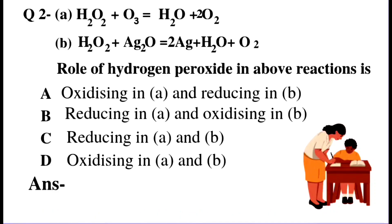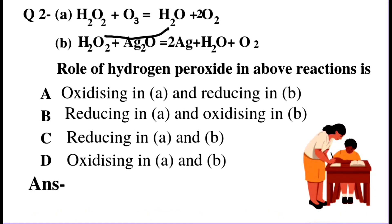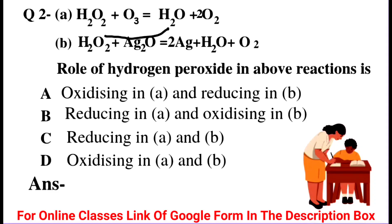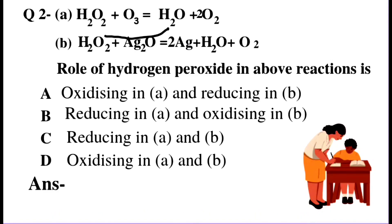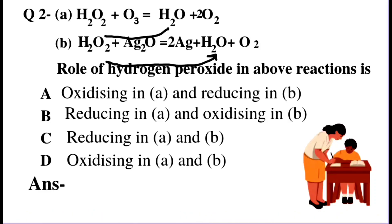So here we have to find the role of hydrogen peroxide in both reactions. In the first reaction, hydrogen peroxide is reduced, so it acts as an oxidizing agent. In the second reaction, hydrogen peroxide also acts as an oxidizing agent. So option number D will be the right answer.